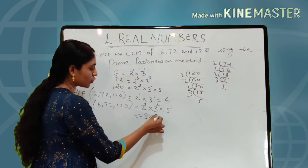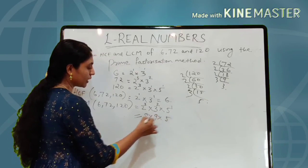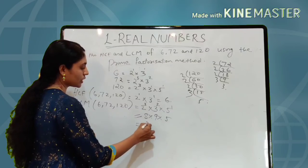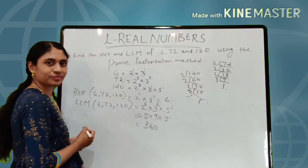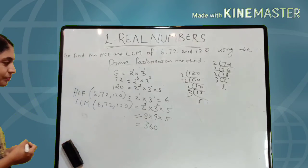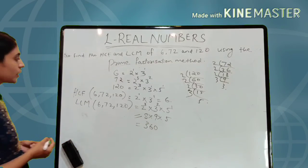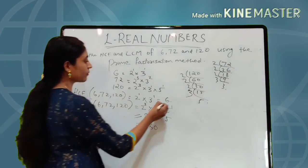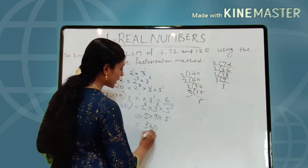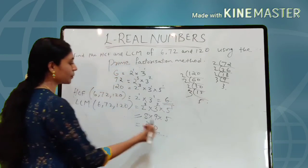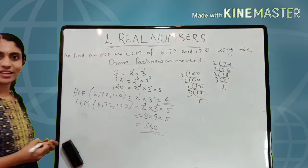So we found HCF(96, 404) = 4 and LCM(96, 404) = 9696 by using the formula HCF × LCM = product of the two numbers.